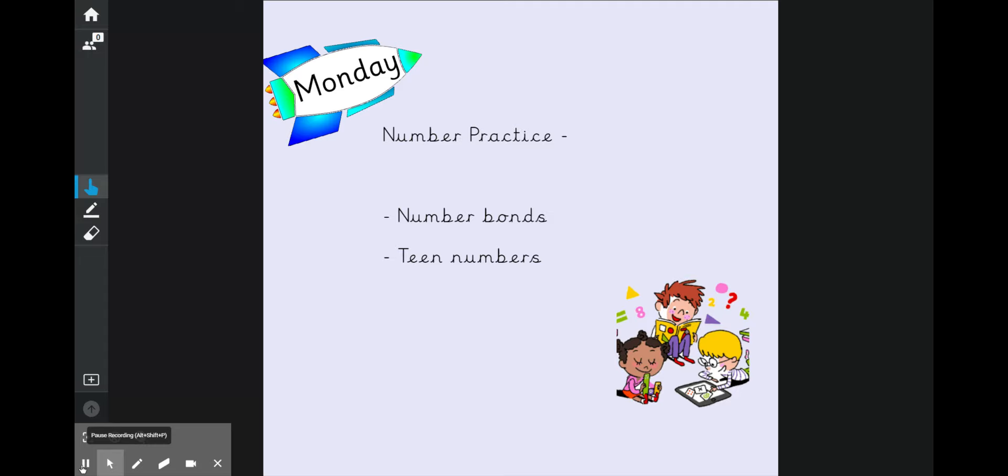Have a little think, can you remember what our teen numbers are? What makes our teen numbers so special? They are the numbers from 11 all the way up to 19, our numbers between 10 and 20. And they all start with a one, because they're all made up of 1 ten, and then a different number of ones.